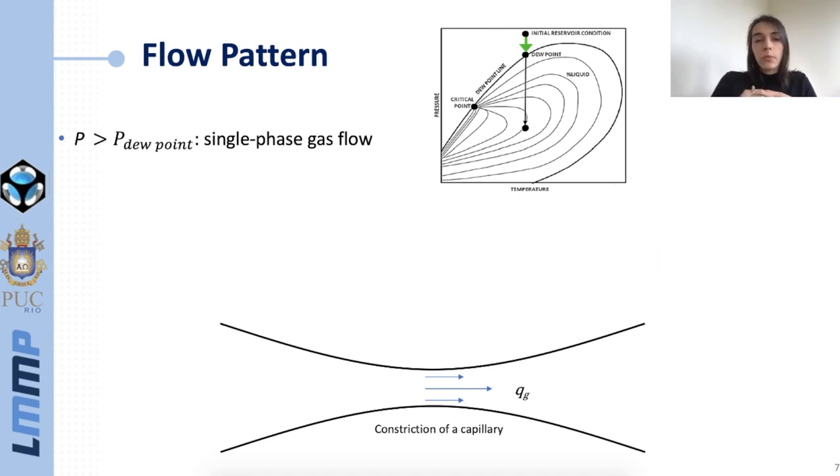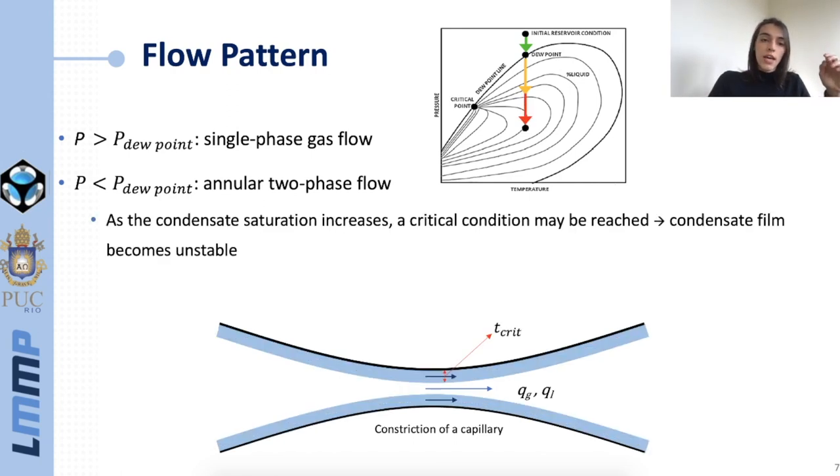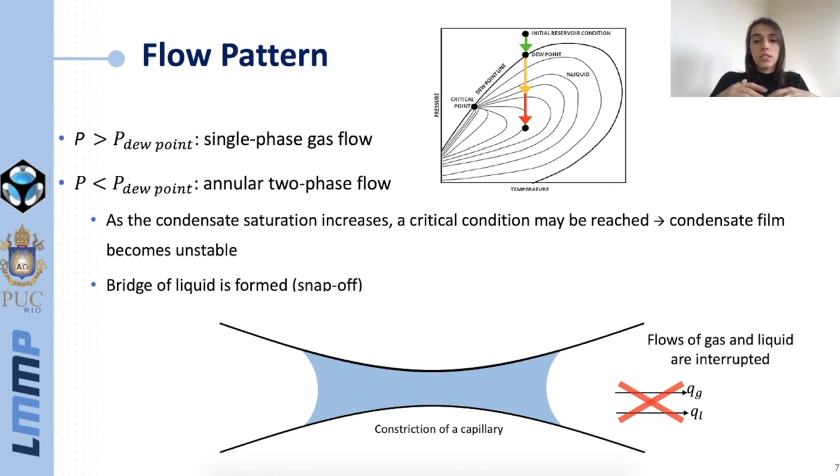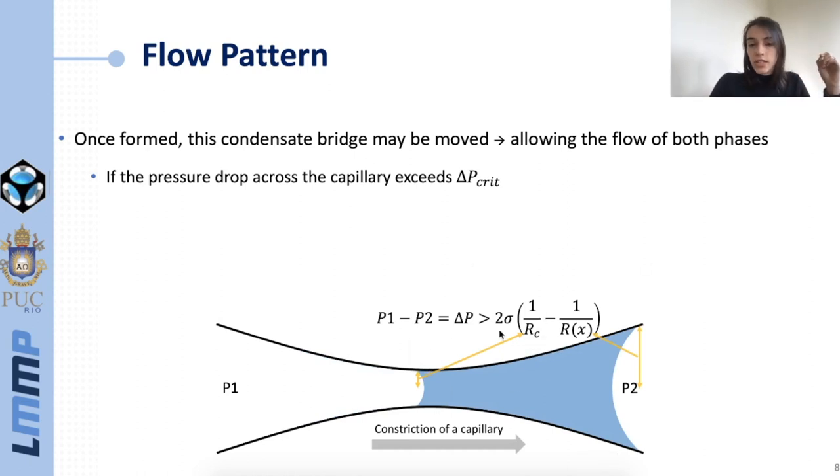Now we can move to the flow patterns. Flow patterns in the capillary vary according to the thermodynamic conditions. If the pressure is above the dew point pressure we have single phase gas flow. At pressures below the dew point we start having an annular two phase flow with gas flowing in the center of the capillary and condensate flowing adjacent to the capillary walls. If this condensate saturation increases too much we may reach a critical condition above which this configuration is no longer stable and we tend to form bridges of liquid in the capillaries. When a capillary accommodates one of those bridges, the flows of both gas and liquid are interrupted. However, once formed this bridge of condensate may be moved, which would allow again the flow of both phases if the pressure drop across this capillary exceeds a critical value. This critical value is given by this equation here. It is a function of the saturation in the capillary, the capillary geometry, and the interfacial tension between the phases.